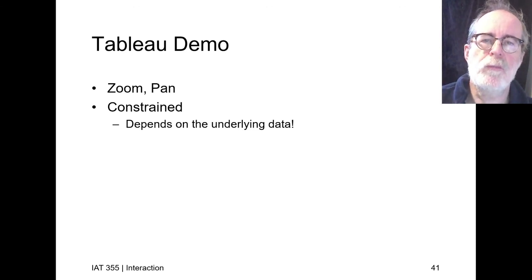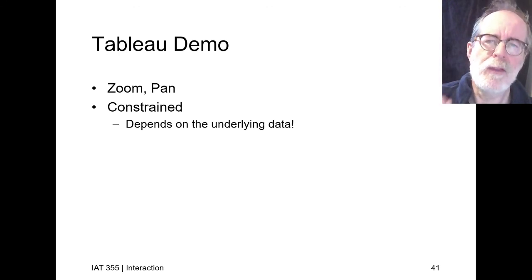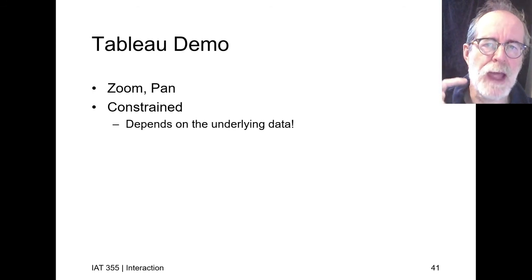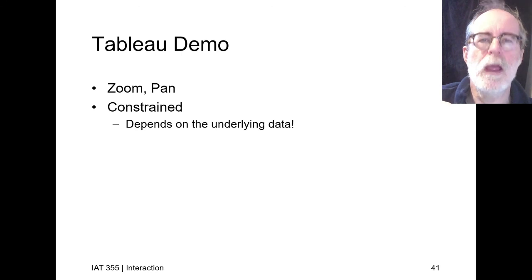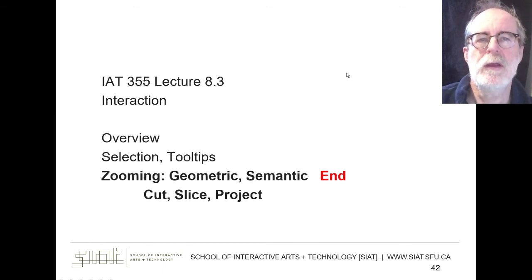The overview-first concept assumes you can get a coherent sense of what's going on from the overview — some big phenomenon understandable in the large. But some data don't work that way in any easy-to-digest form, so both approaches are valuable. That wraps it up for IAT 355 lecture 8.3, where we've been talking about zooming — geometric and semantic — as well as cut, slice, and project.